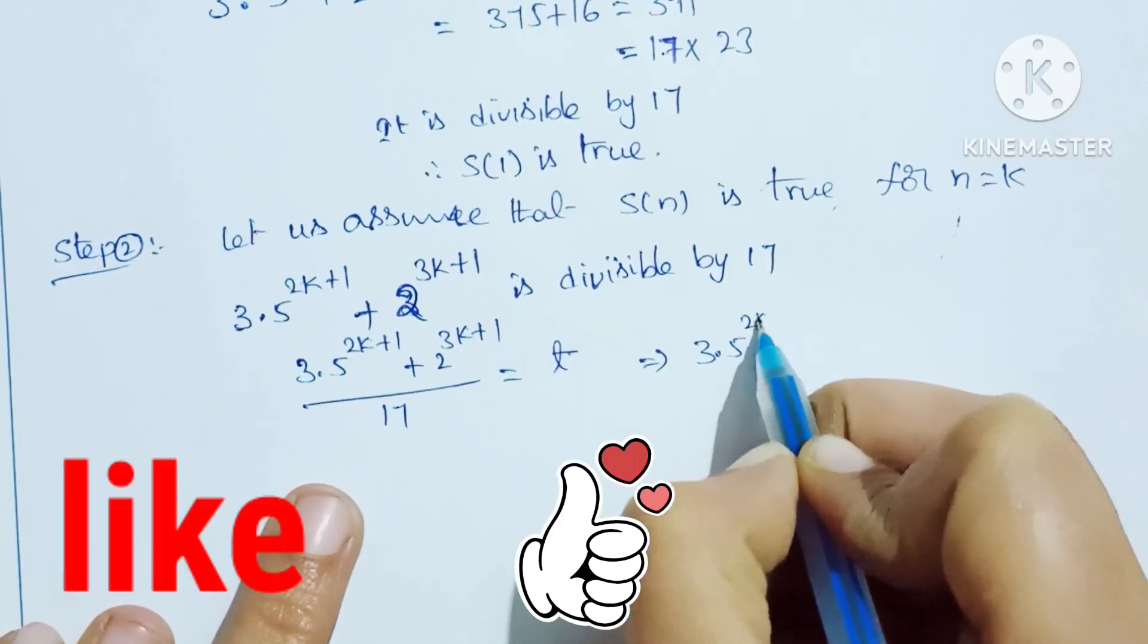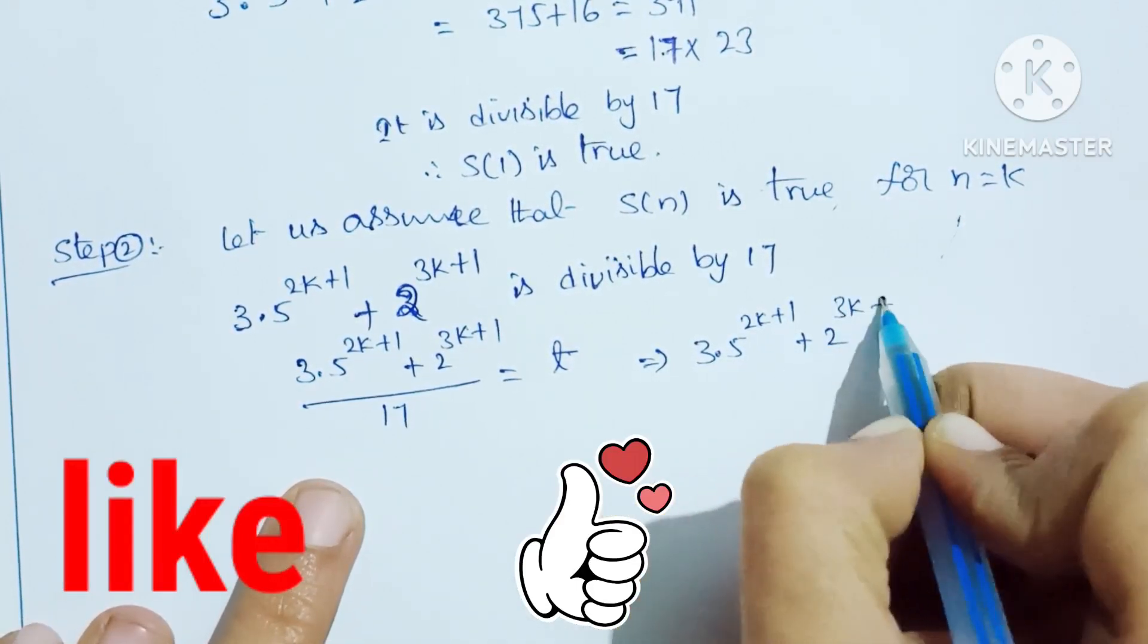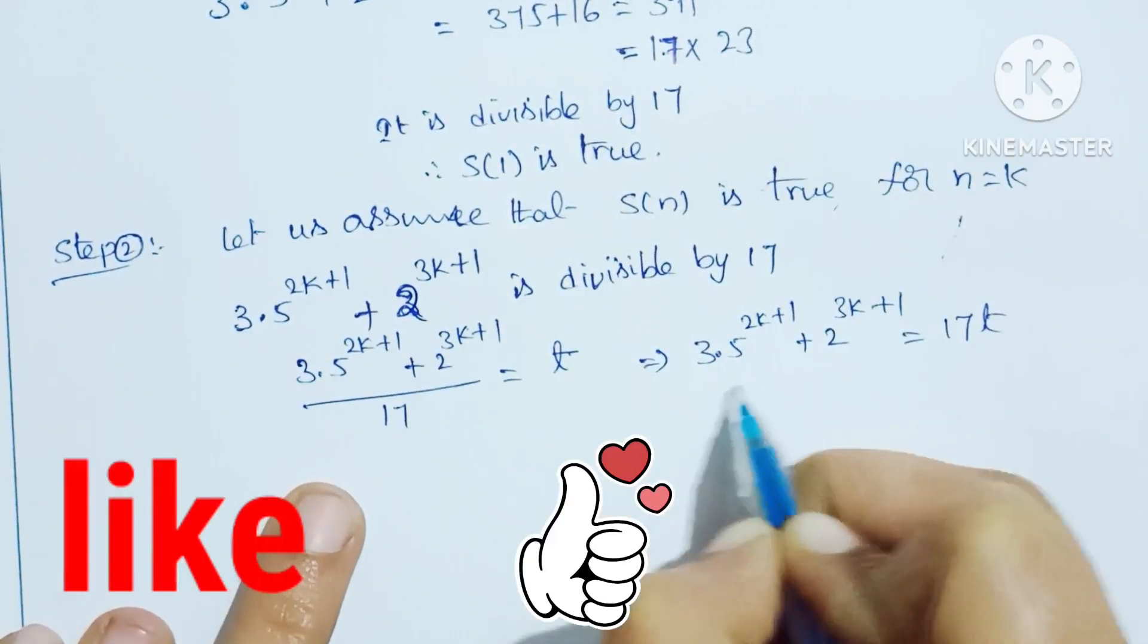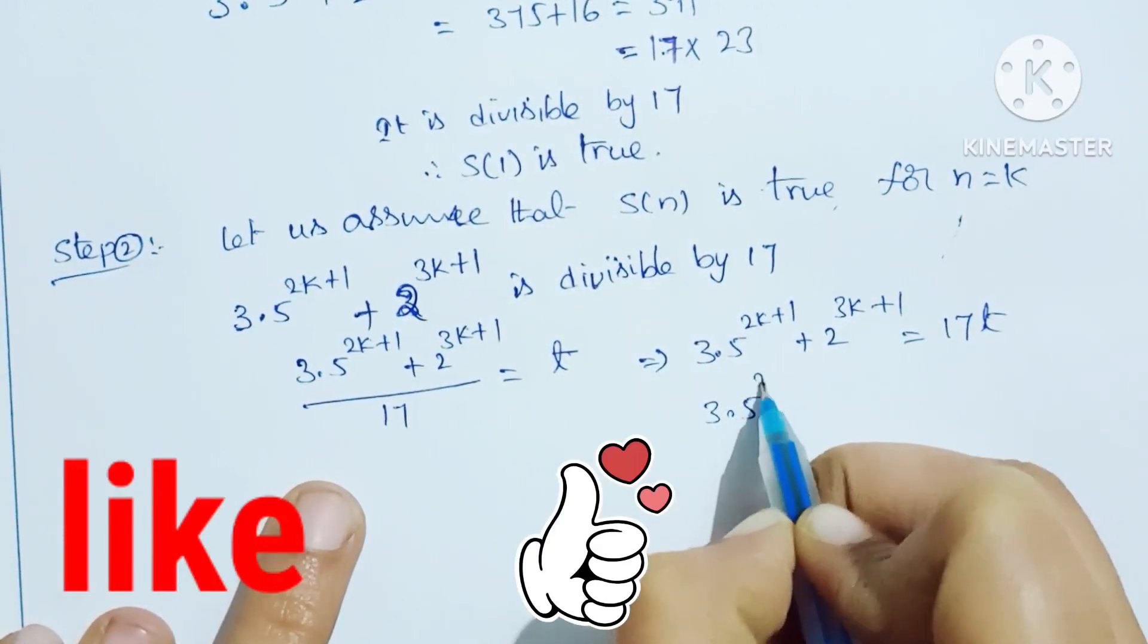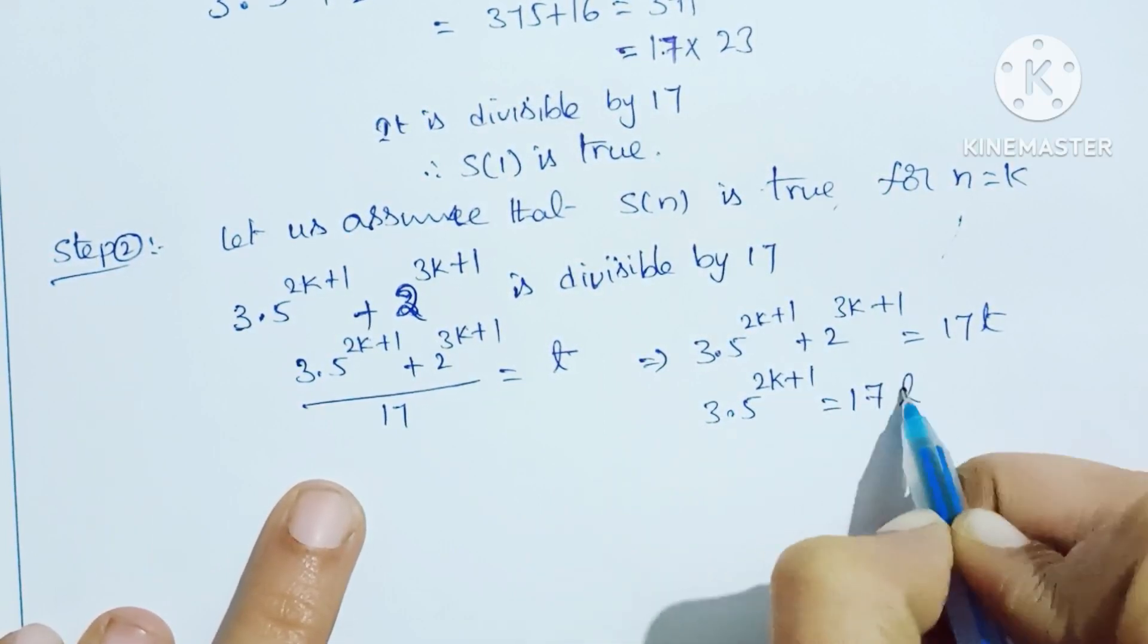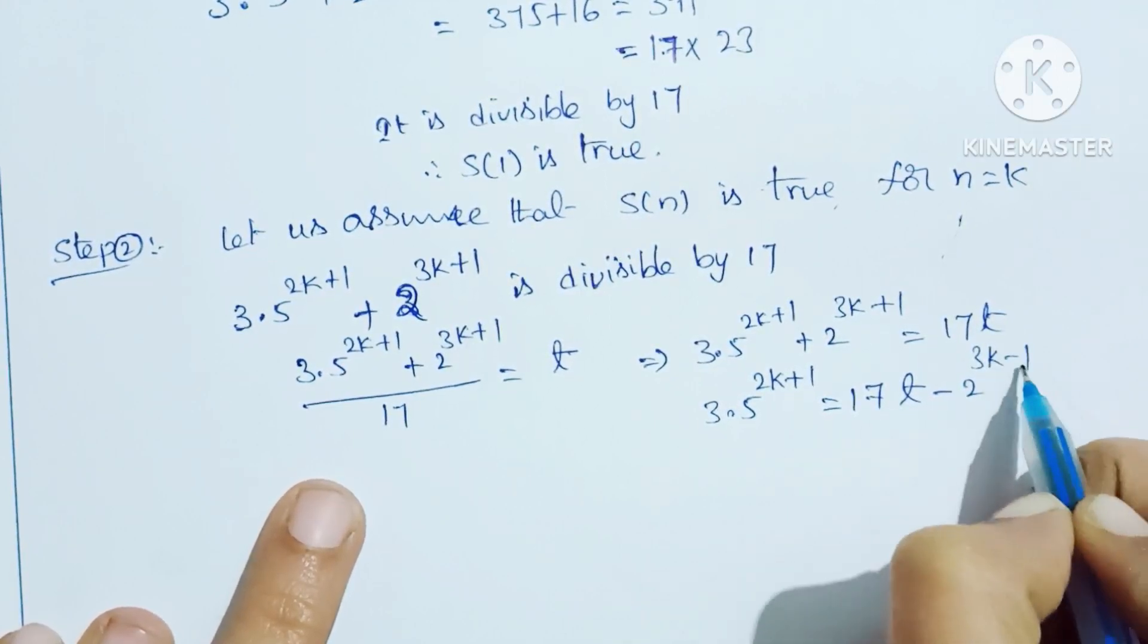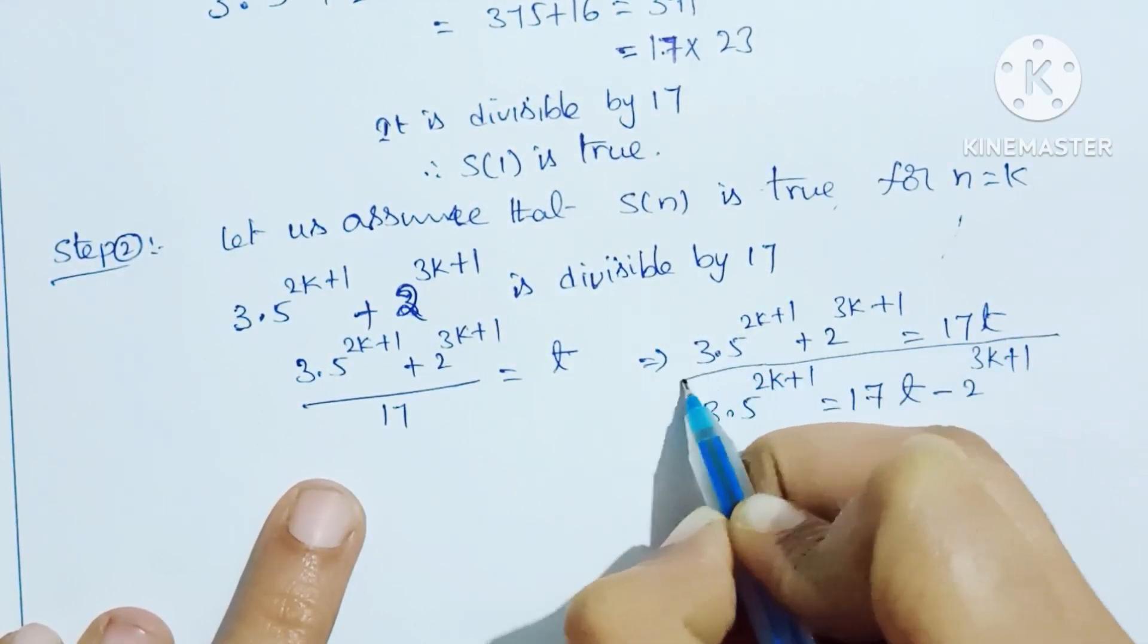3 into 5 power 2k plus 1 plus 2 power 3k plus 1 equals 17t. This means 3 into 5 power 2k plus 1 equals 17 into t minus 2 power 3k plus 1.